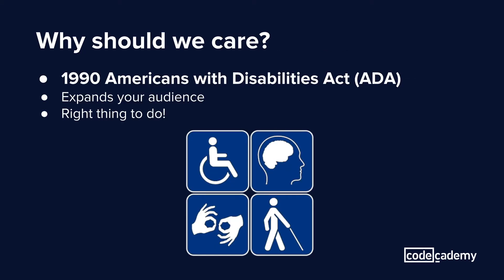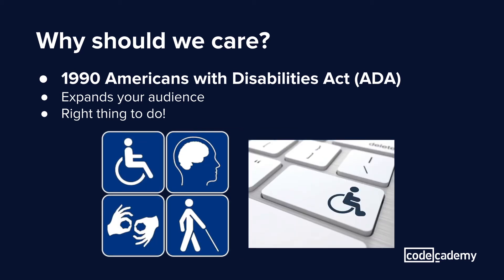The 1990 Americans with Disabilities Act was created to allow people with disabilities — like sensory and cognitive impairments, physical limitations, and so on — to get access to public and private spaces. This extends to digital spaces as well, so developers need to make sure that when they're developing their applications, they're also adding additional support for users with disabilities.